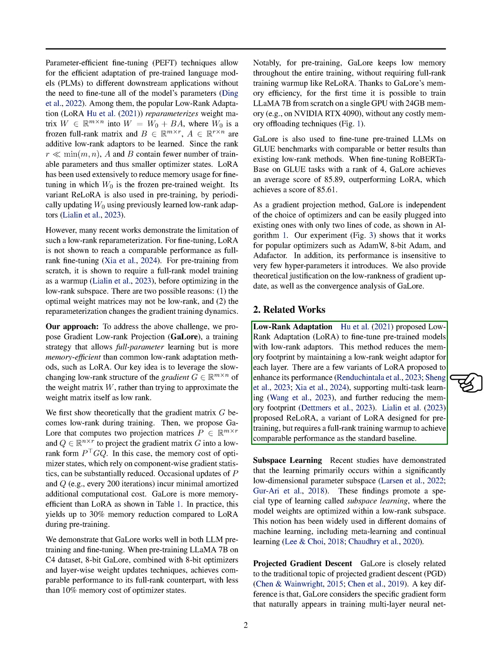Several variants of LoRA have been proposed to improve its performance, support multi-task learning, and further decrease memory usage. ReLoRA, a variant of LoRA, is specifically designed for pre-training but requires a full-rank training warm-up to achieve similar performance to the standard baseline. Recent studies have shown that learning mainly occurs within a low-dimensional parameter subspace, leading to the concept of subspace learning where model weights are optimized within a low-rank subspace. This idea is widely used in various machine learning domains such as meta-learning and continual learning.